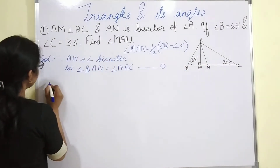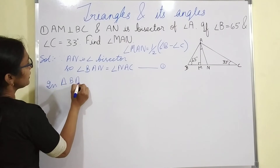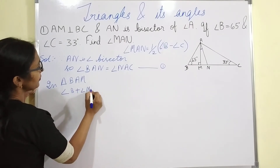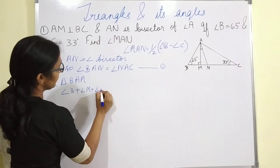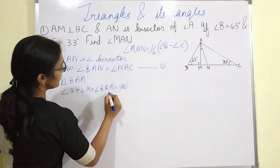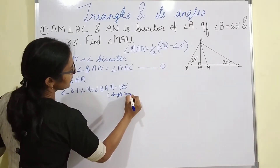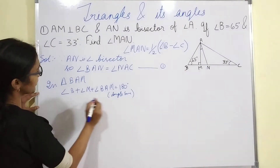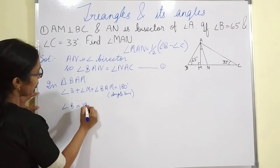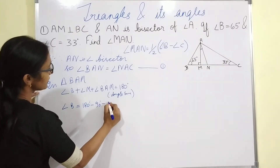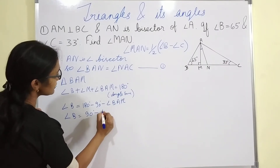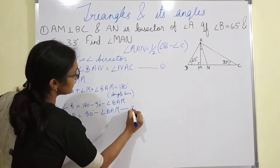In triangle BAM, angle B plus angle M plus angle BAM equals 180 degrees, by angle sum property. Since M is 90 degrees, angle B equals 180 minus 90 minus angle BAM, so angle B equals 90 minus angle BAM. This is equation 2.